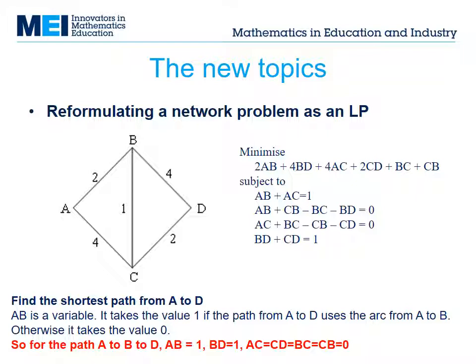The second condition says that if a path arrives at B then it must leave B. That works for our example — the path goes into B once and comes out of B once. The third condition says the same thing for C. Our path doesn't go through C, so all those variables are 0.